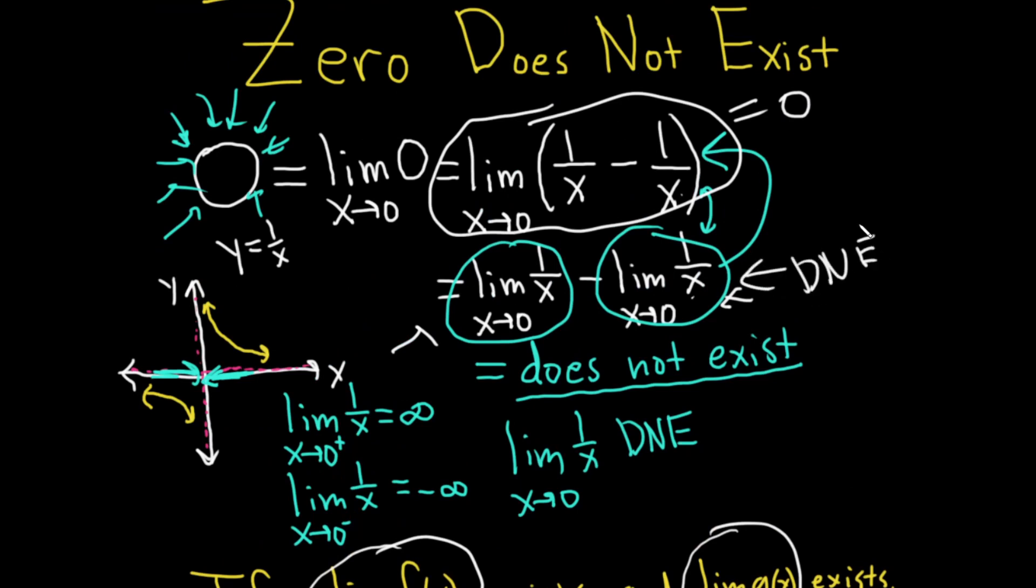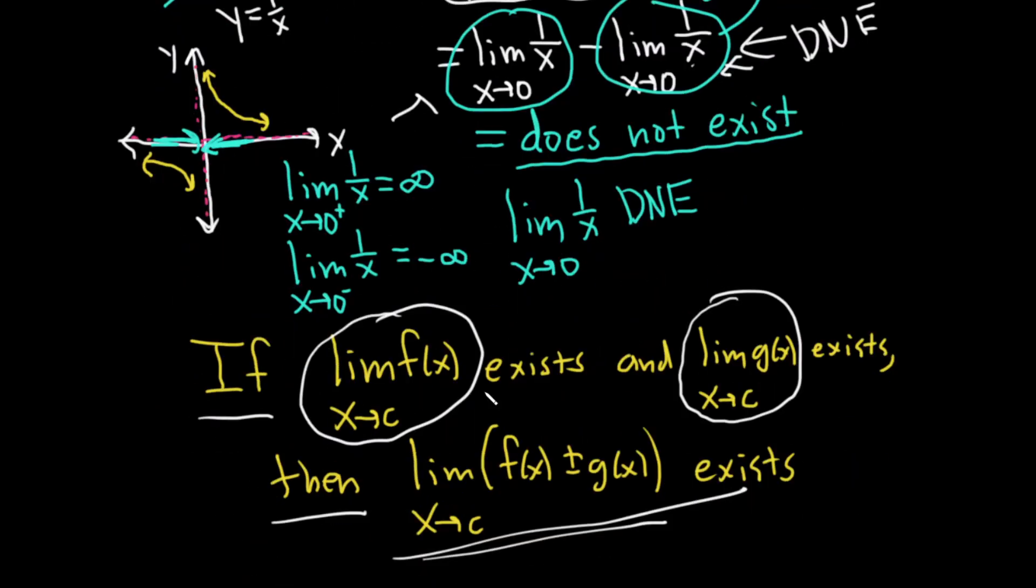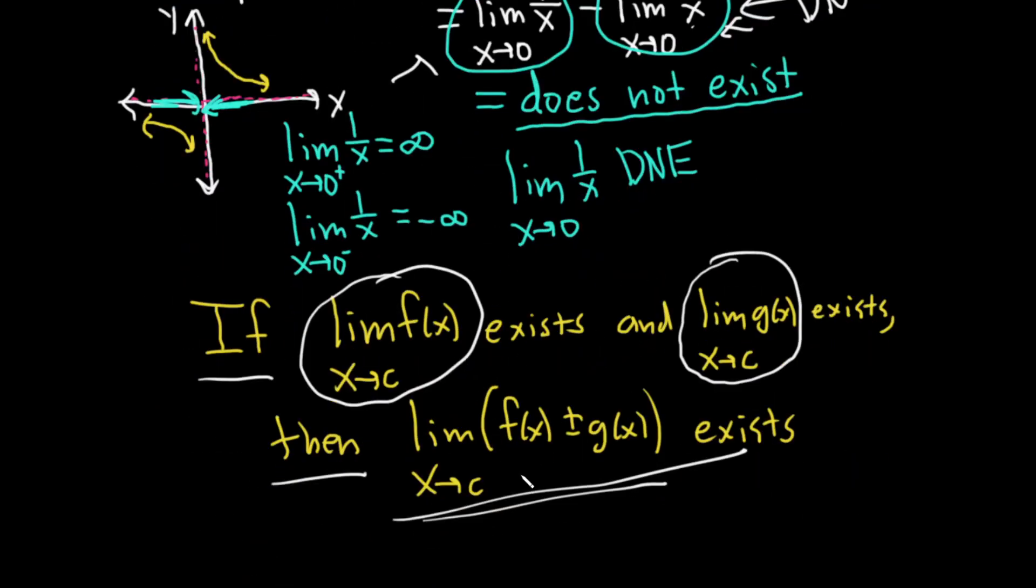So just because you have something that exists as a whole doesn't mean that the separate pieces are going to exist. The separate pieces must exist, and then and only then can you combine them into a single piece and say it exists.